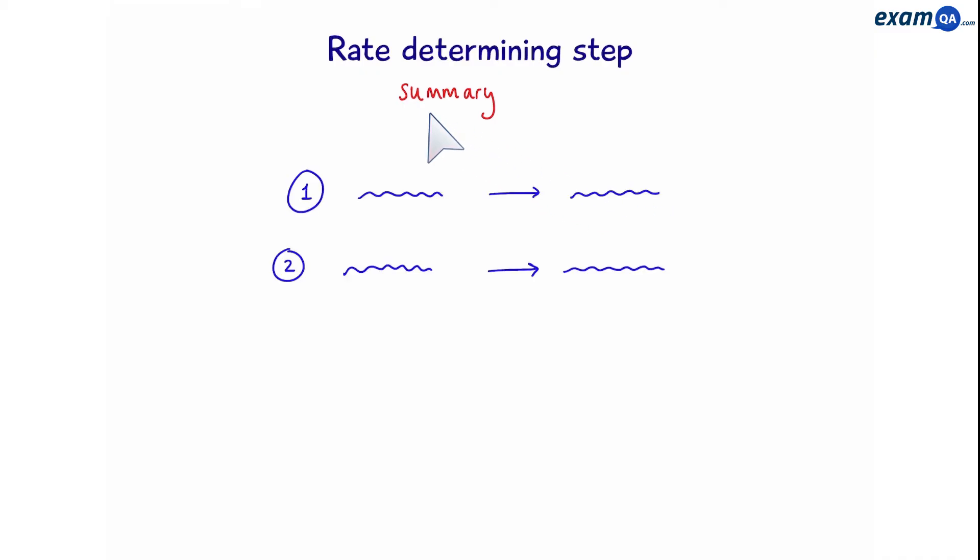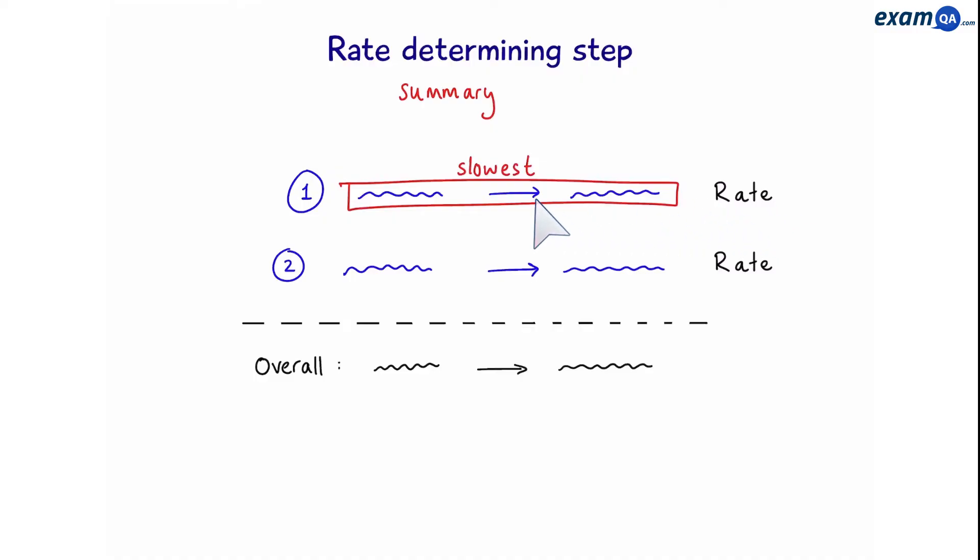So, in summary, when you have multiple steps which together add up to give you an overall reaction, each stage has its own rate. However, the step with the slowest rate is also known as the rate determining step.